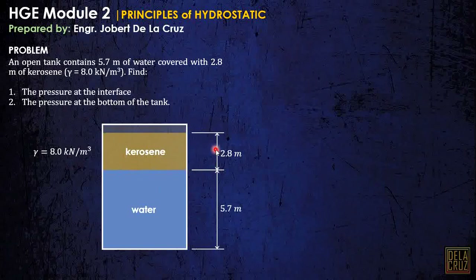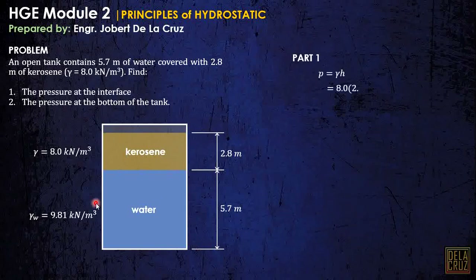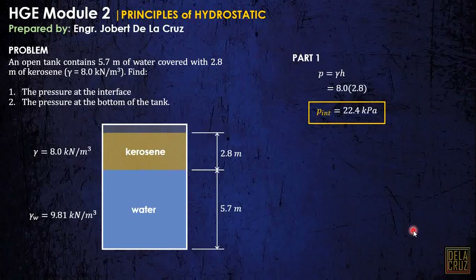Take note that the unit weight of kerosene here is 8.0, and water is 9.81. For part 1, that is just gamma times height: 8.0 — the gamma of the kerosene — times the height of the kerosene, and that is 22.4 kPa. Now, at the bottom of the tank, the total pressure at that point is just the summation of pressure from the top all the way down to the bottom.